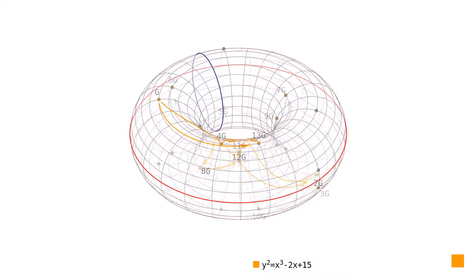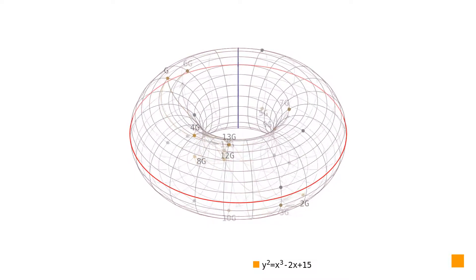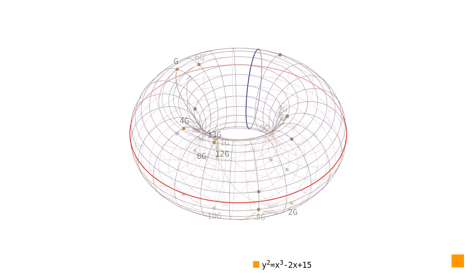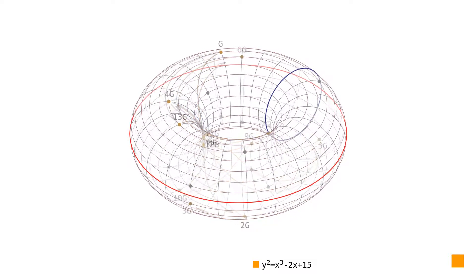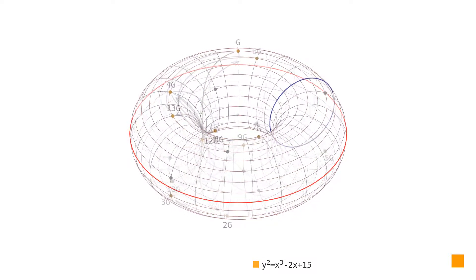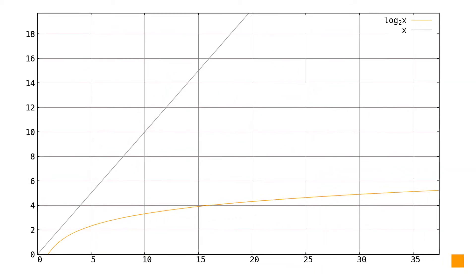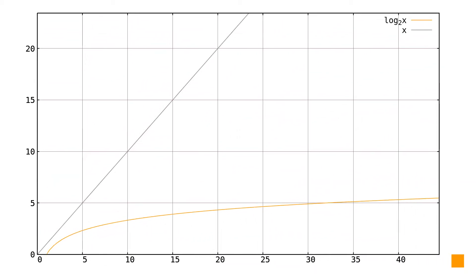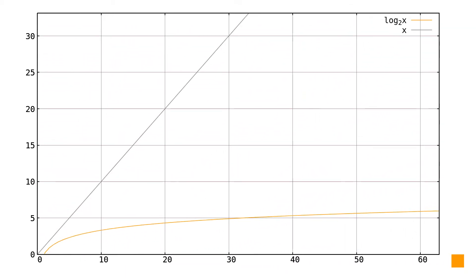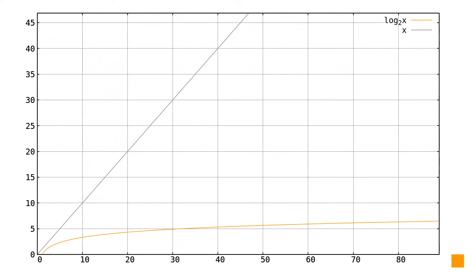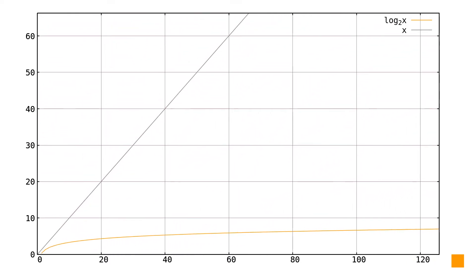So it is 5 operations to reach the point 13G, and 12 operations to reveal how we got there in this case. Generally speaking, the number of operations required to perform scalar multiplication using the double-and-add algorithm rises with the logarithm of the scalar number.